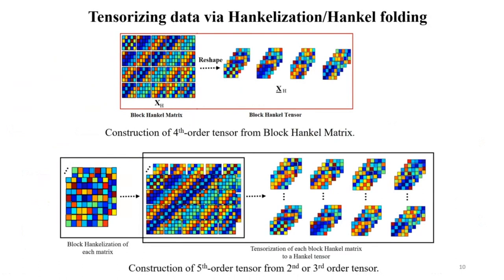Motivated by multi-way delay embedding, we propose a block Hankel approach. A block Hankel matrix is a large matrix made up of sub-Hankel matrices, which can be reshaped into a fourth-order tensor where each block is also Hankel data. Depending on the data size, we can generate up to sixth or seventh-order tensors using this block Hankel approach. A Hankel matrix has identical entries along each skewed diagonal. In block hankelization, the large matrix is made up of blocks of smaller Hankel matrices.